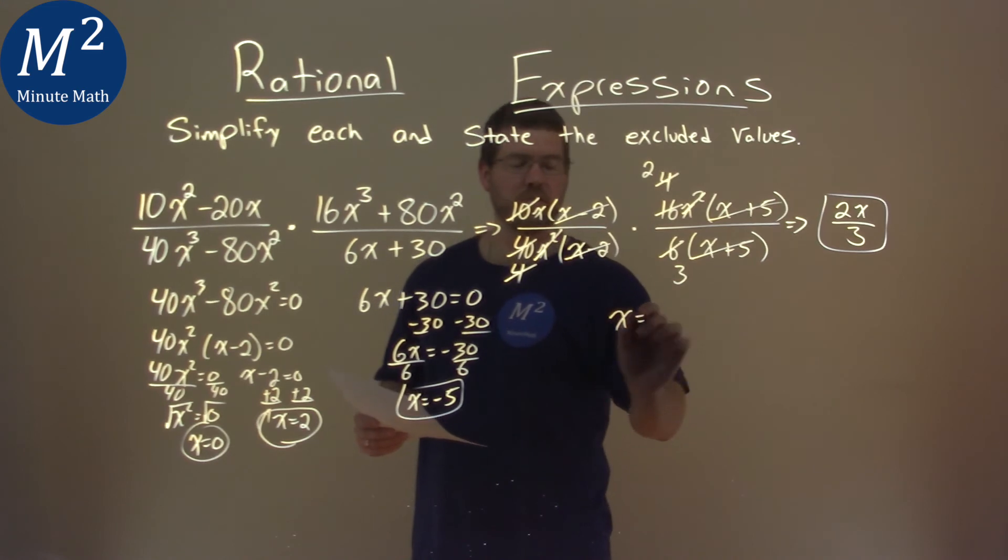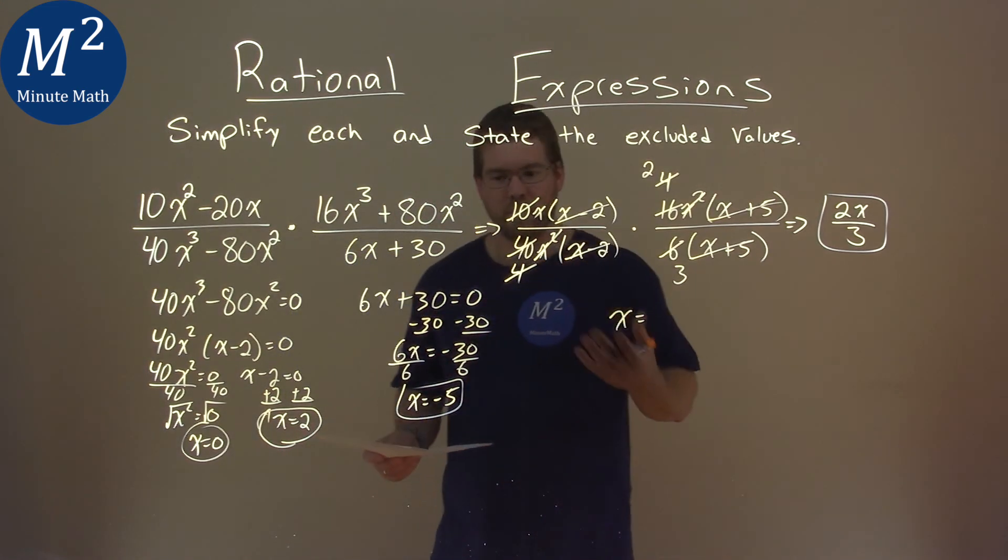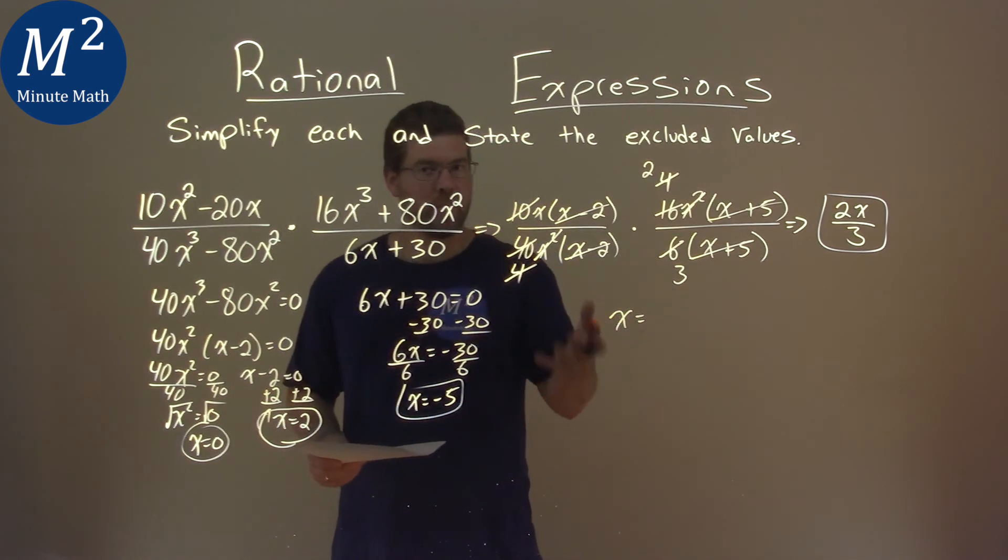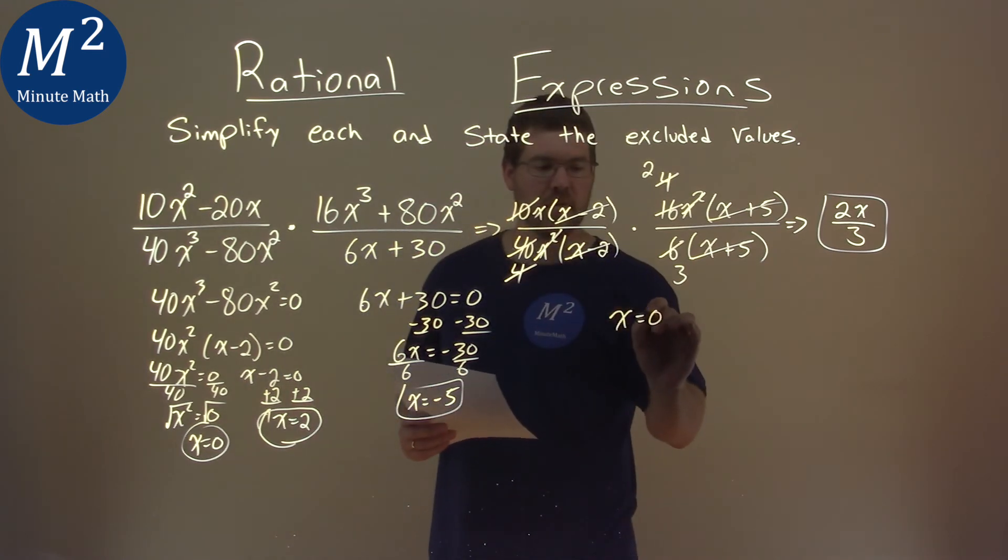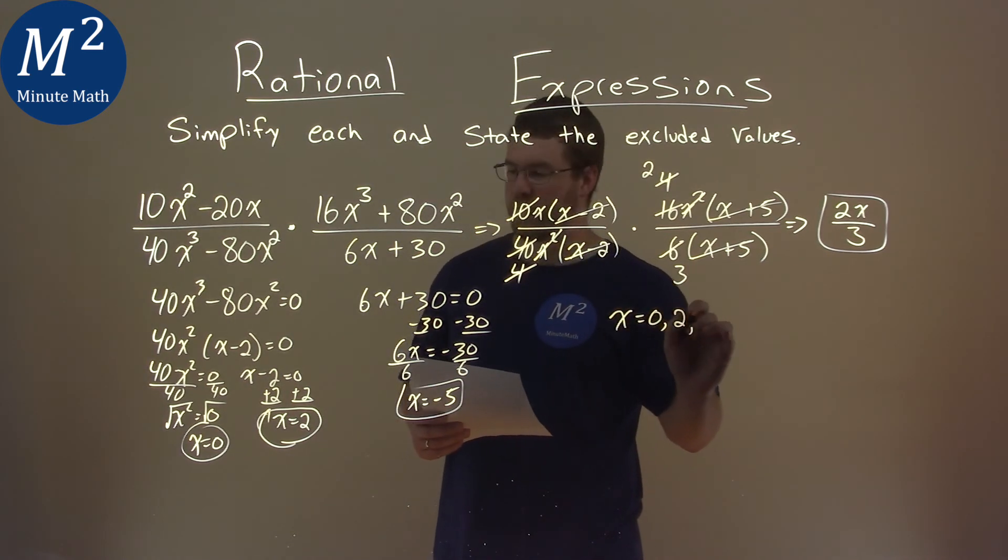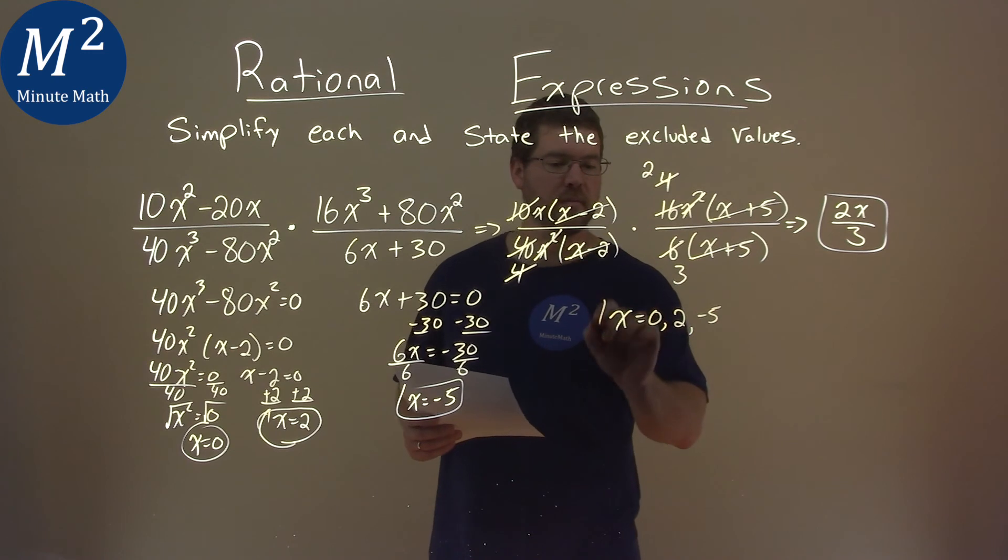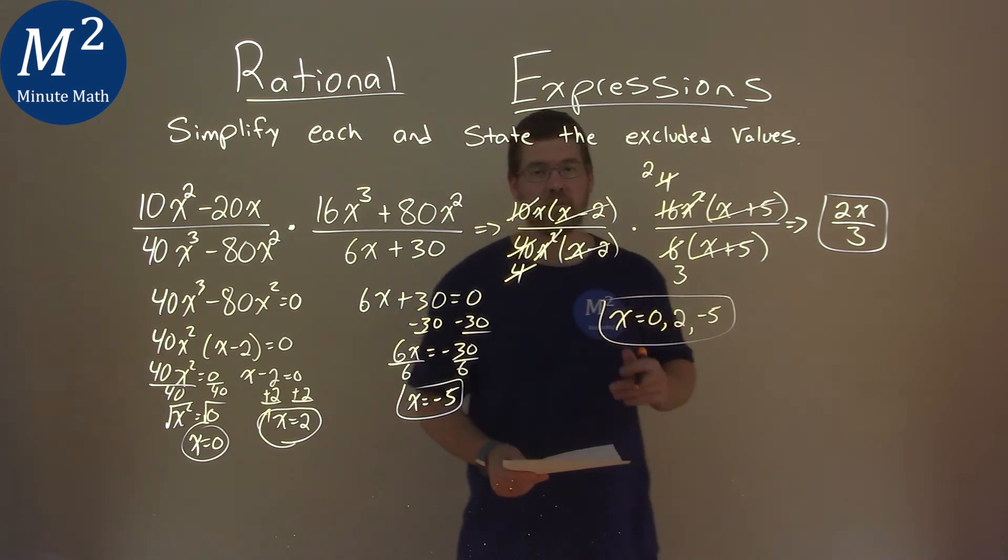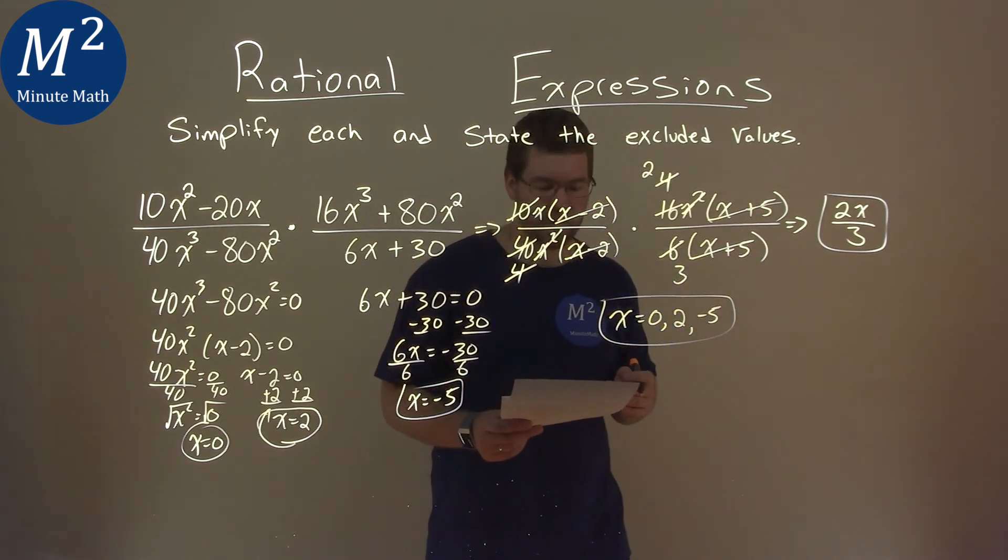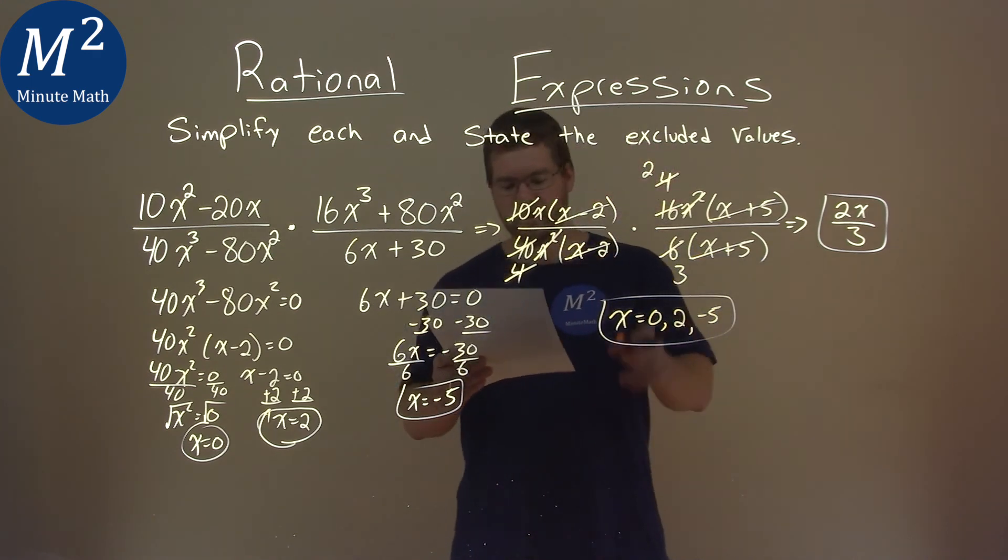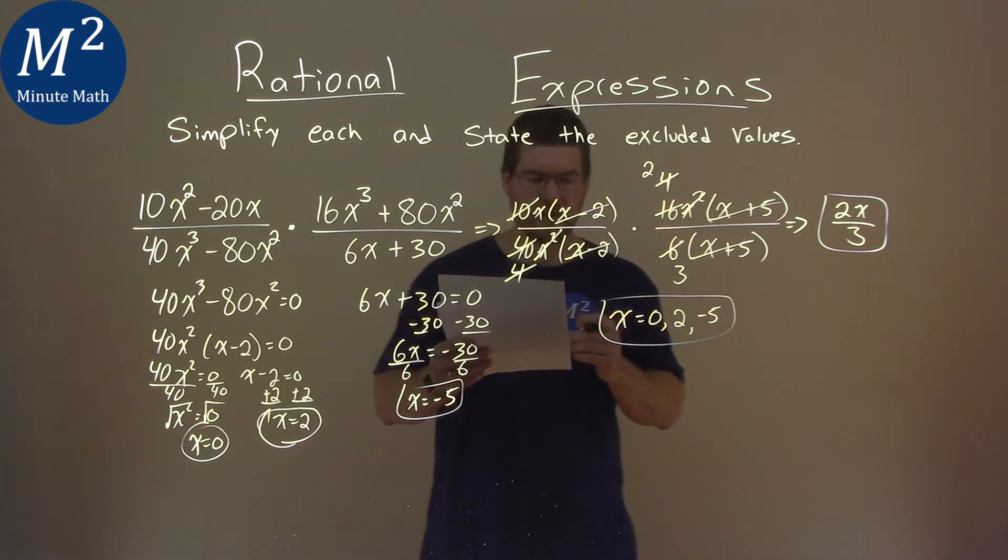And so our excluded values, we're dividing, if we put this into our expression, we're dividing by 0, so we have to exclude that, this is when x is 0, a positive 2, and a negative 5. And so my final answer, simplified, is 2x over 3, and the excluded values are 0, 2, and negative 5.